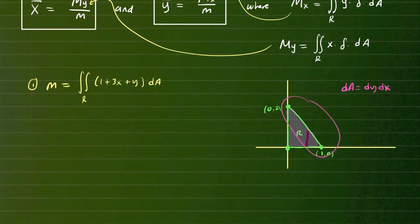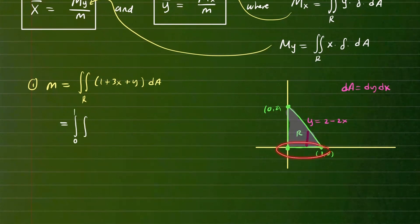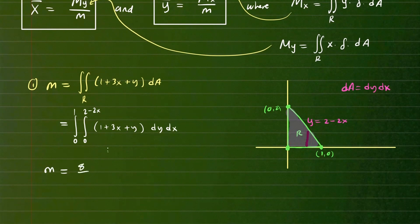We need the equation of the hypotenuse line connecting (1,0) and (0,2). Using point-slope form, that equation is y = 2 − 2x. So the double integral for mass goes from 0 to 1 in x, and from 0 to 2 − 2x in y, of the density function 1 + 3x + y, dy dx. After finishing the integration, the mass comes out to be 8/3.